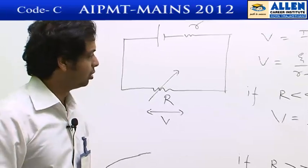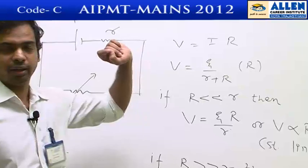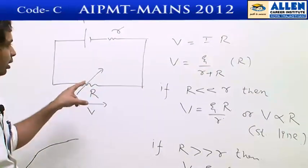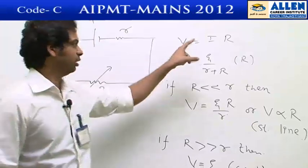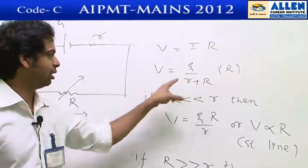According to Ohm's law, voltage across resistance will be V equals to I R, and I is delivered by given cell and its value will be its EMF divided by total resistance r plus R.